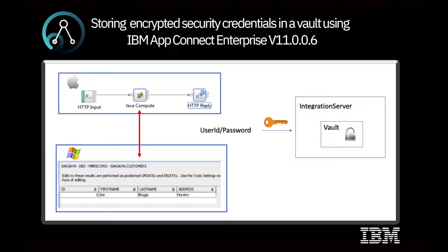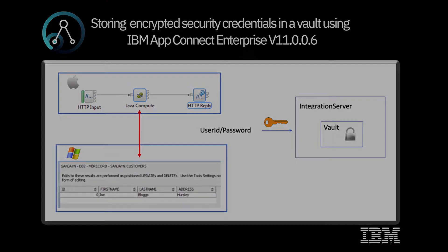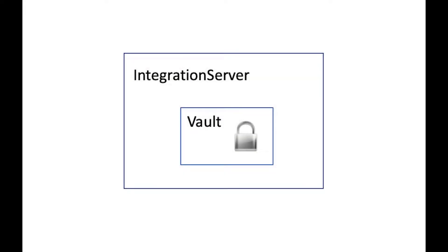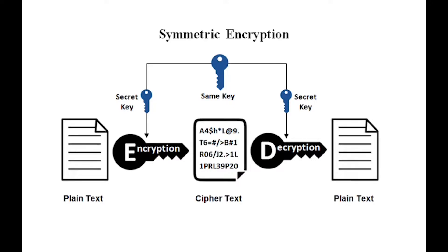I will be using an independent integration server and will use the same flow and policy that I used in an earlier video which demonstrated how to use policy and policy overrides. New in AppConnect Enterprise version 11 FixPack 6 is a vault which uses symmetric encryption to encrypt and decrypt data records stored in the vault. AES 256-bit encryption is used for encrypting the data in the vault.